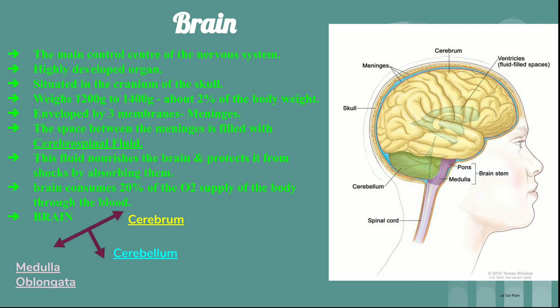The brain is divided into three parts: the cerebrum is the upper part, the cerebellum is the middle part, and the lower portion which continues as the spinal cord is known as the medulla oblongata — also known as the brain stem. From the picture you can see the yellow part is the cerebrum, the green part is the cerebellum, and the violet part is the medulla, which continues downward as the spinal cord. This is covered by the skull, and below it are three membranes called meninges, with the blue-colored cerebrospinal fluid visible between them.